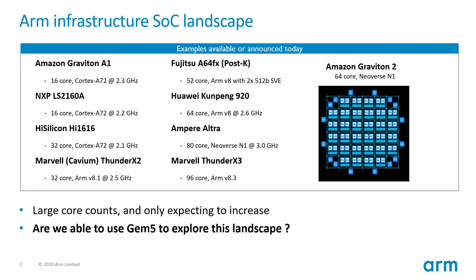Let's start by setting the context for this work. When we look at the landscape for infrastructure SoCs — and by infrastructure I mean servers, cloud, and HPC — we see that the number of cores in a single die is currently in the range of 32 to 64 cores, and this is expected to increase. The question now is: can gem5 produce meaningful simulation results when we scale up beyond 32 and 64 cores? For this kind of large SoC design, the availability of good memory subsystem and good on-chip interconnect models plays a major role, and this is what's driving the work I'm presenting today.